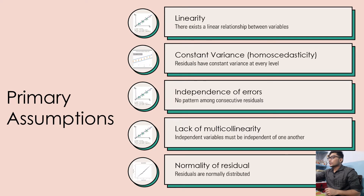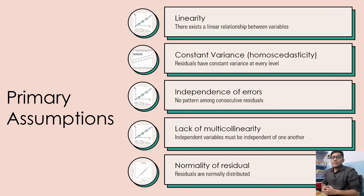Constant variance. We also want to understand here that constant variance, also known as homoscedasticity. Whenever the residuals have constant variance at every level of our data points, then we call it a homoscedastic dataset and the linear regression assumption is met.